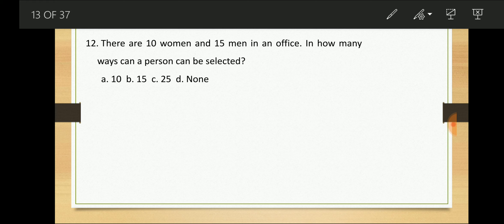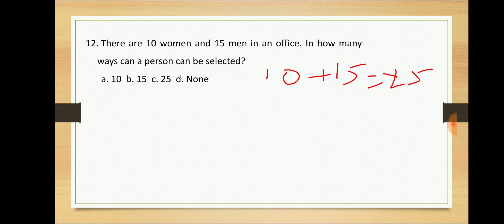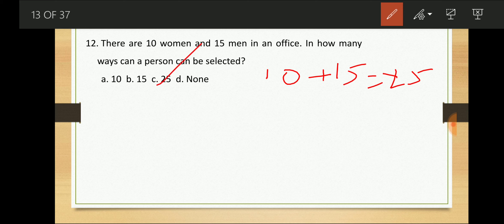There are 10 women and 15 men in an office. In how many ways can one person be selected? Since any gender is acceptable, I have 10 options for women and 15 options for men. Total = 10 + 15 = 25 ways to select one person.